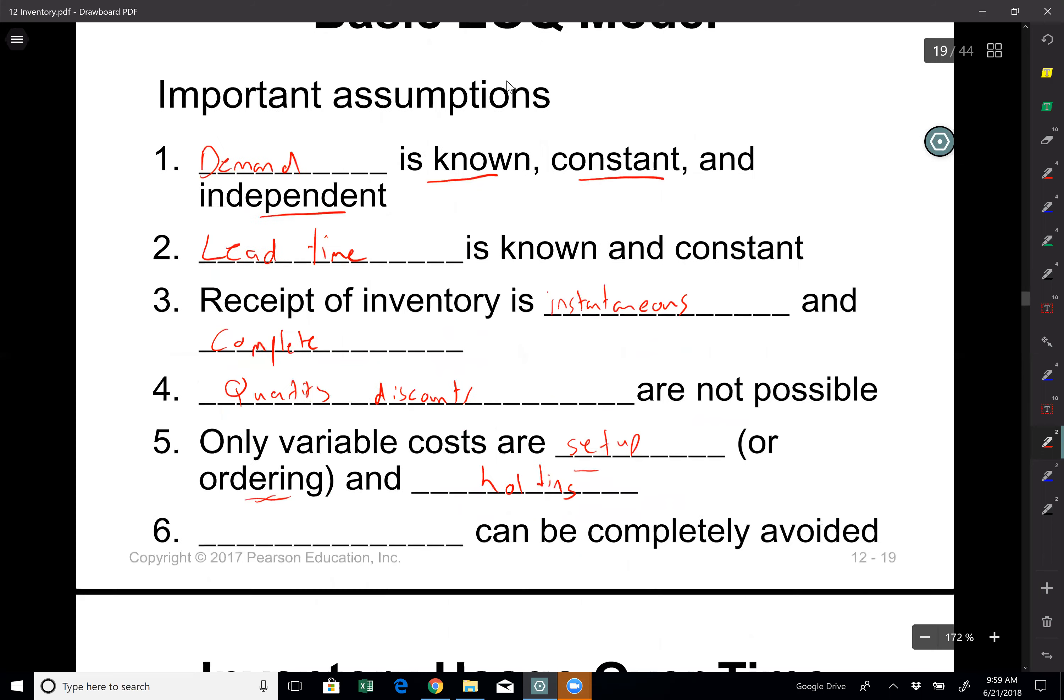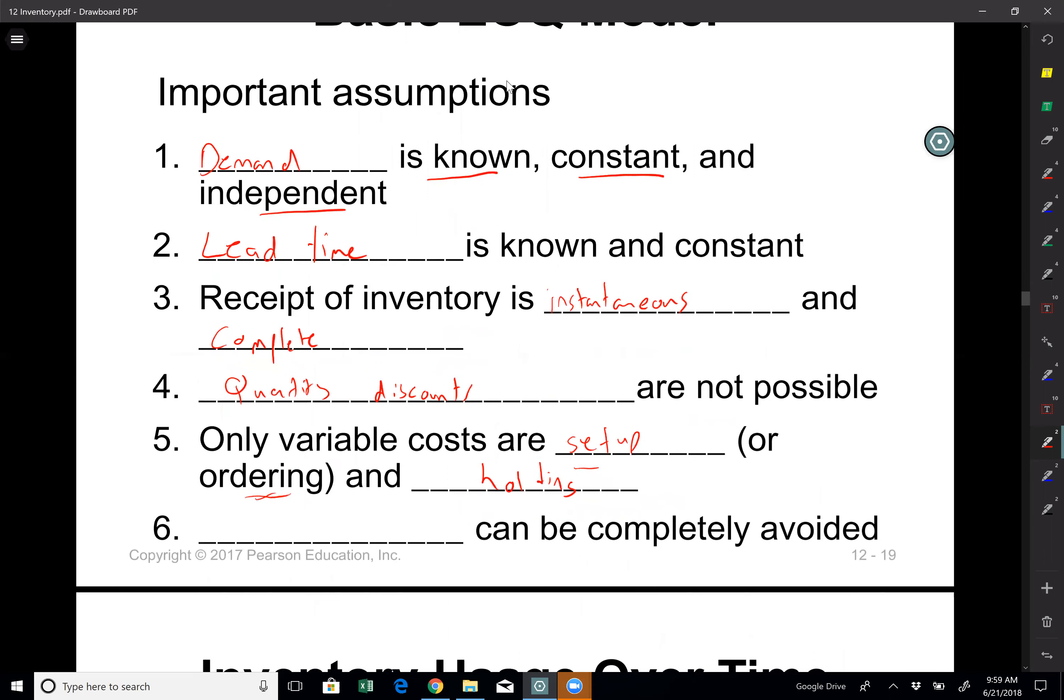And another assumption here is stockouts can be completely avoided which is again a big assumption. If you have high demand in real life we will have stockouts problem and we cannot really avoid it. But in a basic EOQ model we assume that stockouts can be avoided.